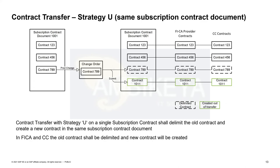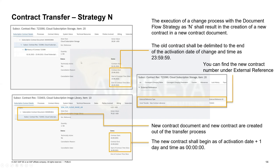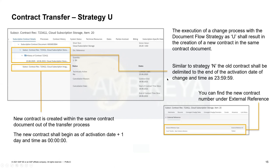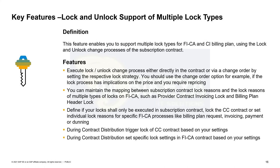In screenshots: for Strategy N, you can see the original contract, then after running the transfer process a new contract is created with all data copied over, and there is a link between both contracts — the old contract knows which new contract it was copied to and vice versa. The old one is delimited, the new one is created automatically. For Strategy U, the original contract runs through the change process and copies everything, but does not open a new contract document — instead it creates a new item within the same contract document, with the relation visible in the external reference assignment block.